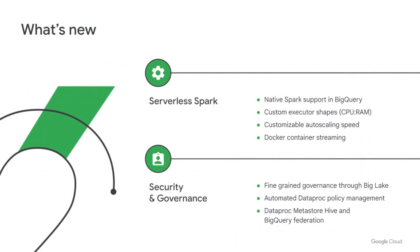Now let's look at what's new. We have implemented Spark natively in the BigQuery API. For serverless Spark, we have added custom executor shapes for jobs that require high or low memory. You can now customize your auto-scaling speed through Spark properties. And for serverless Spark, you can now stream custom containers to all the workers to significantly lower startup latency. On the security and governance side, you can get fine-grained governance for files using Spark through Big Lake. You can automate policy management across your fleet of Dataproc clusters. And you can federate BigQuery metadata in real time with the Dataproc managed Hive Metastore for your Spark applications to work seamlessly with BigQuery.